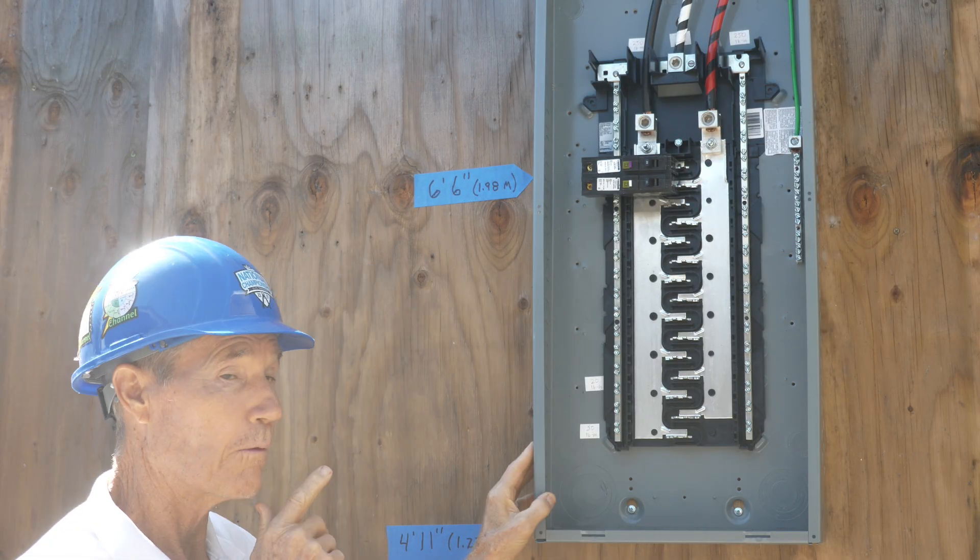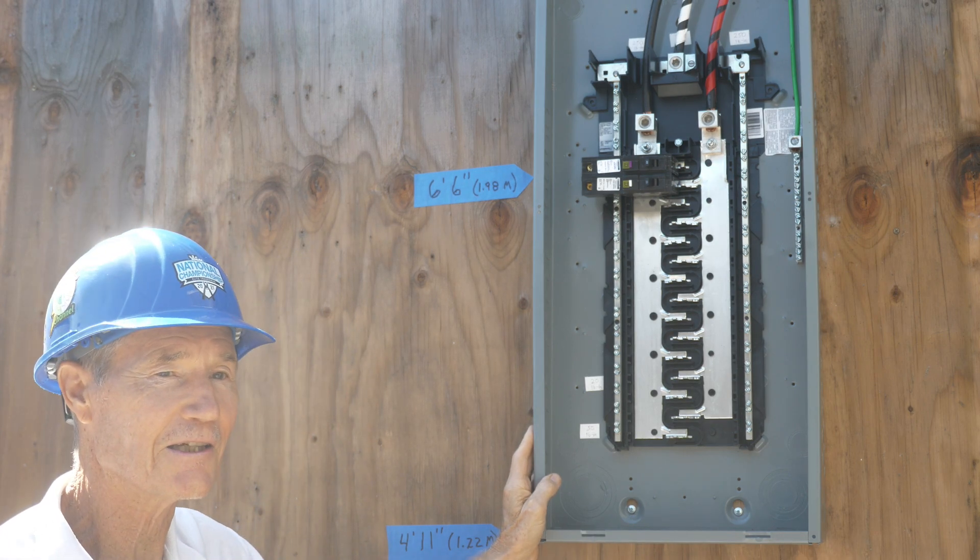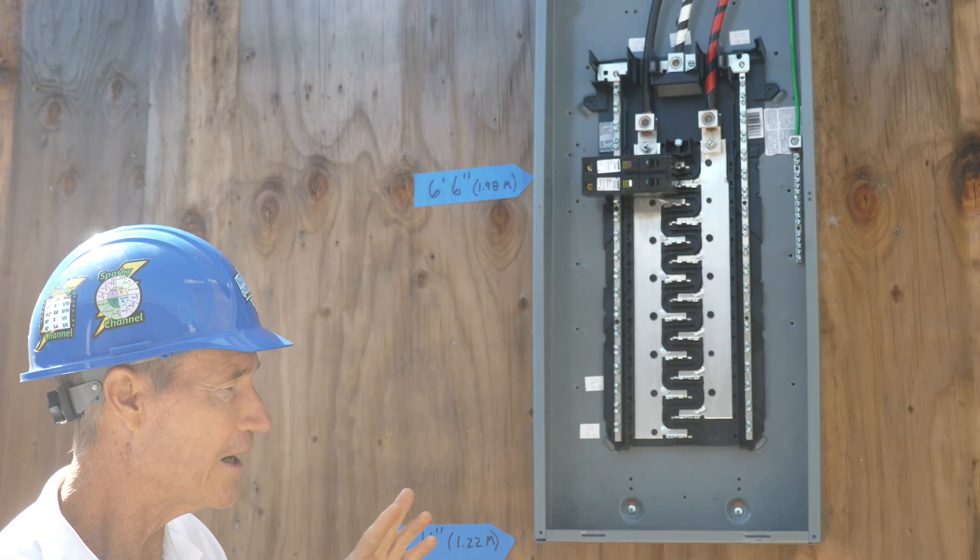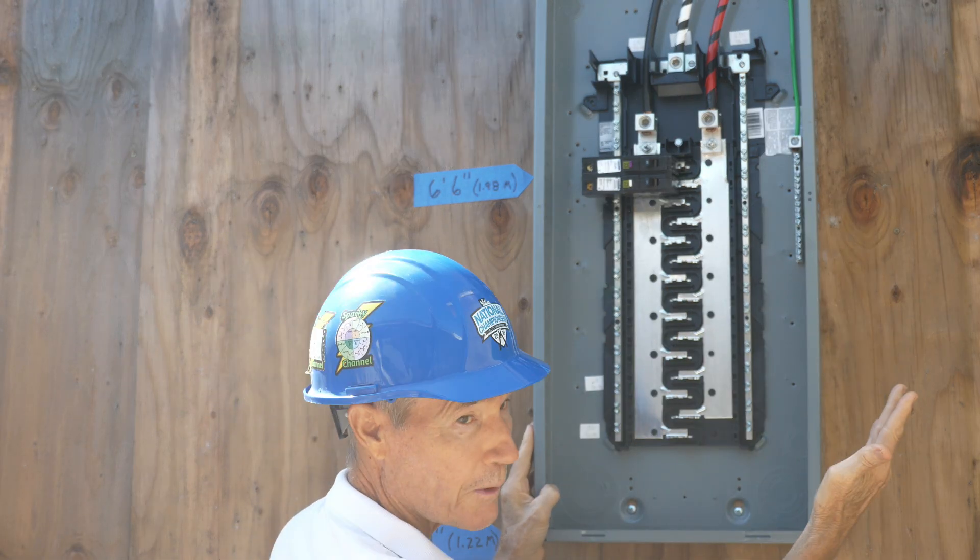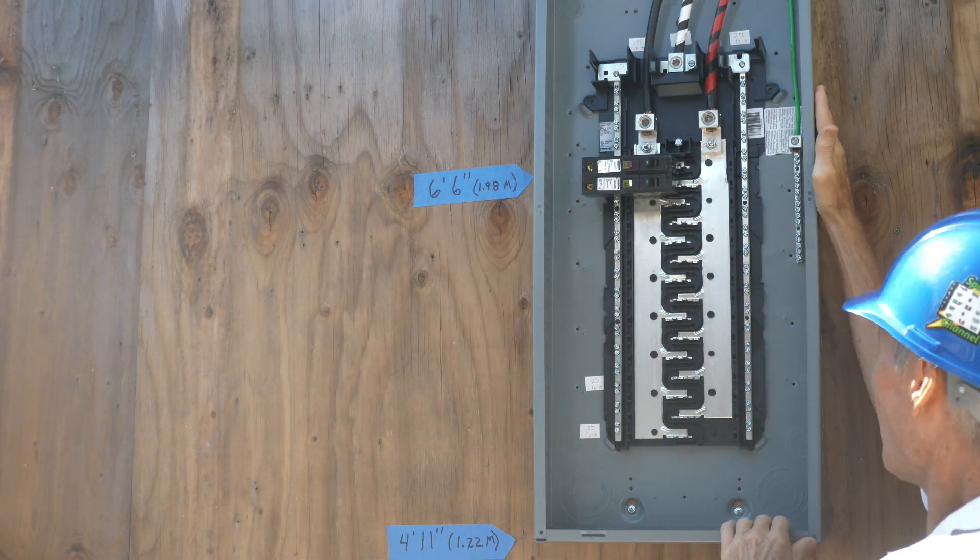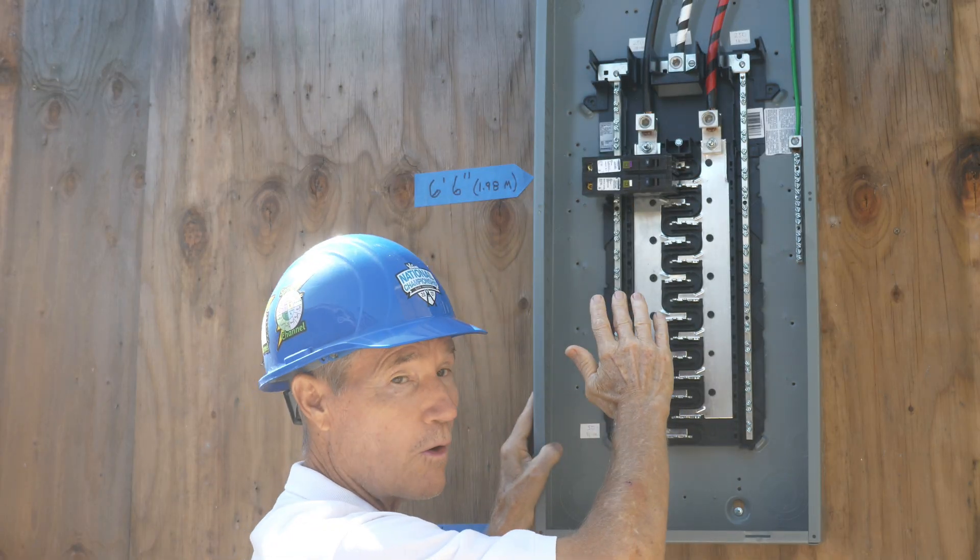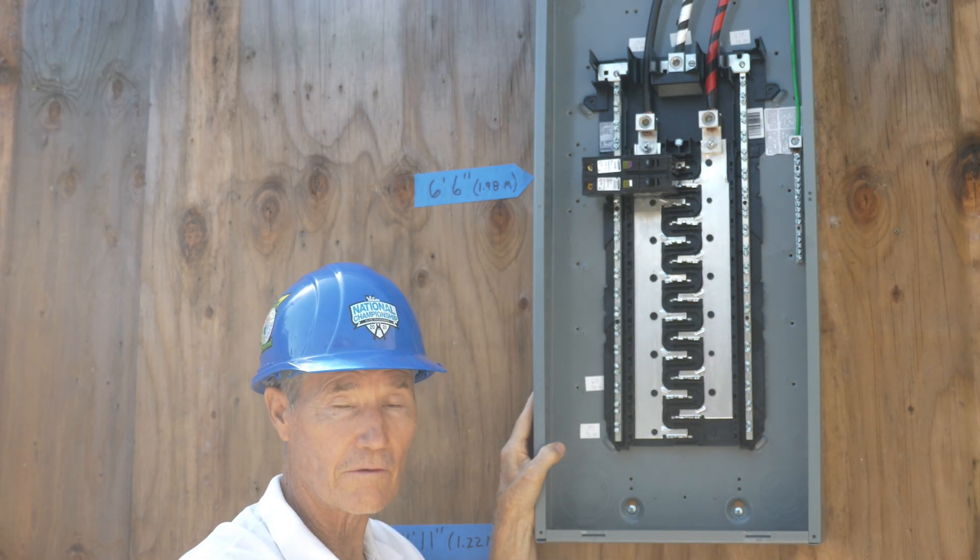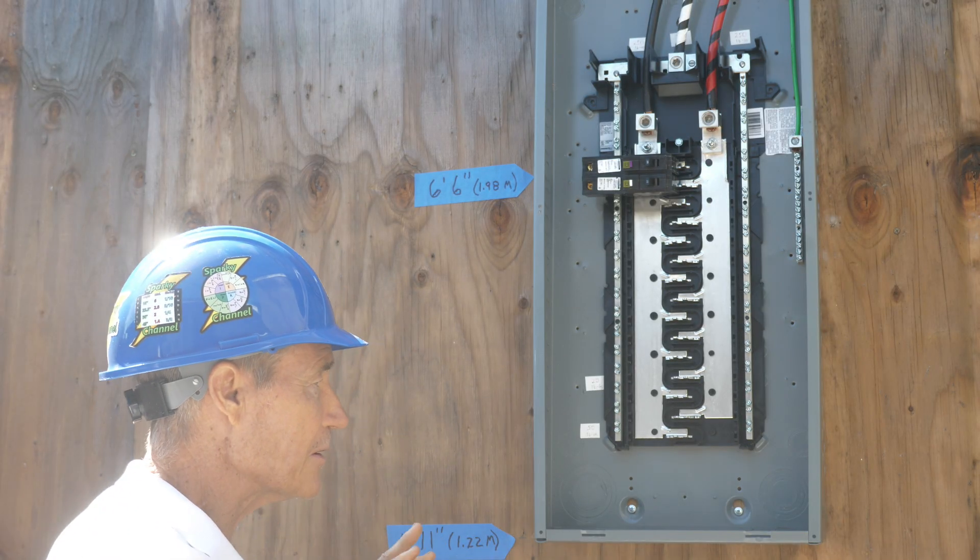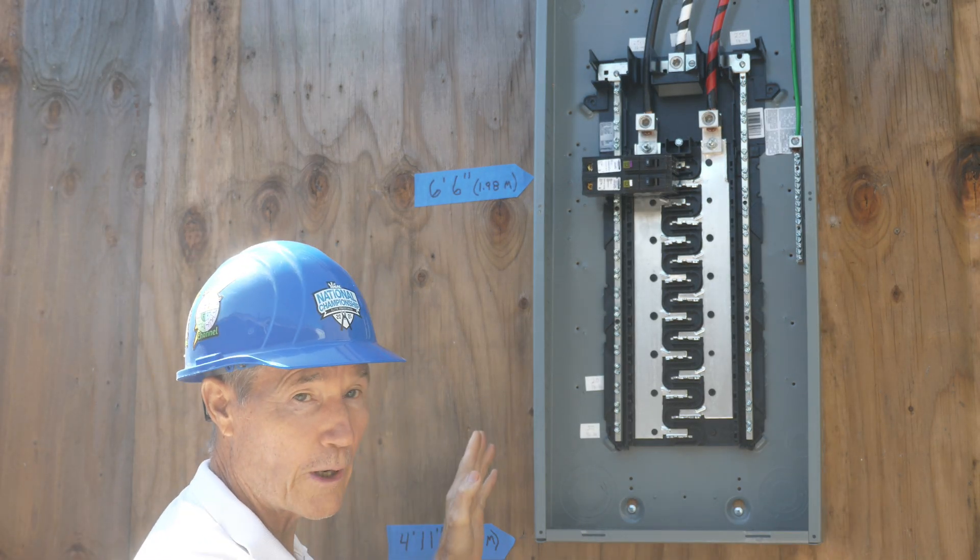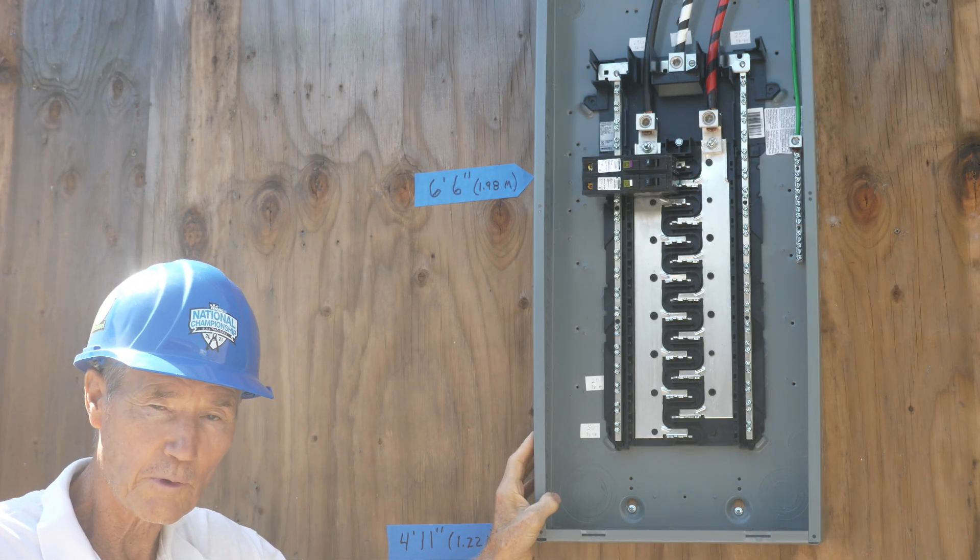So what do you think, do you think this is installed too high? Well the answers are to be found in the 2023 NEC code. And something else I'd like to go over: my panel door opens this way, and what if there's a wall right here and this door can only open for 90 degrees, would that be okay by code? And how much workspace do you need around this panel?